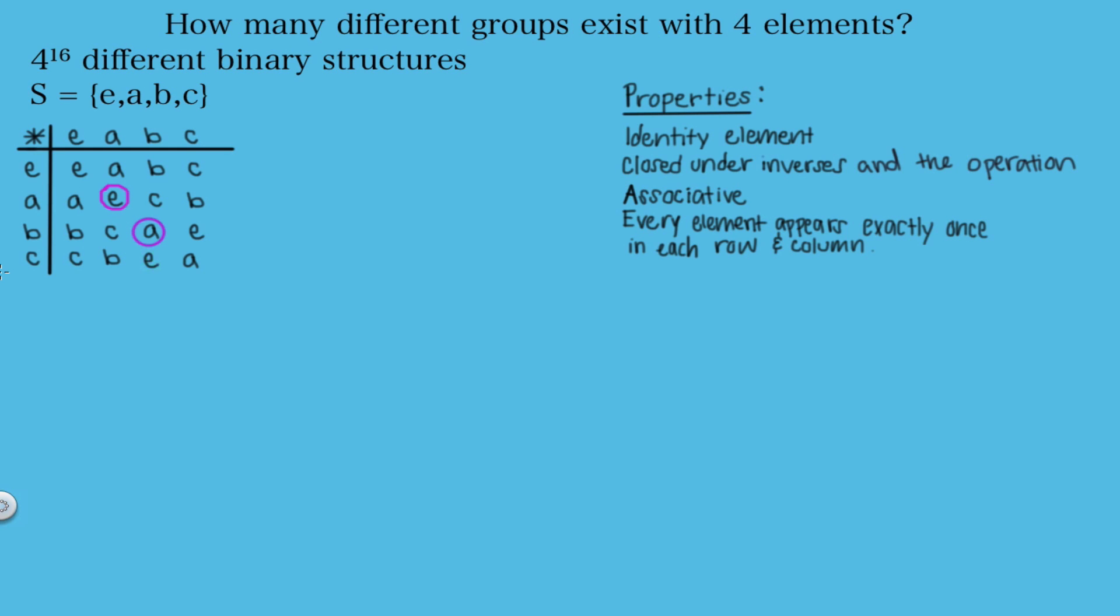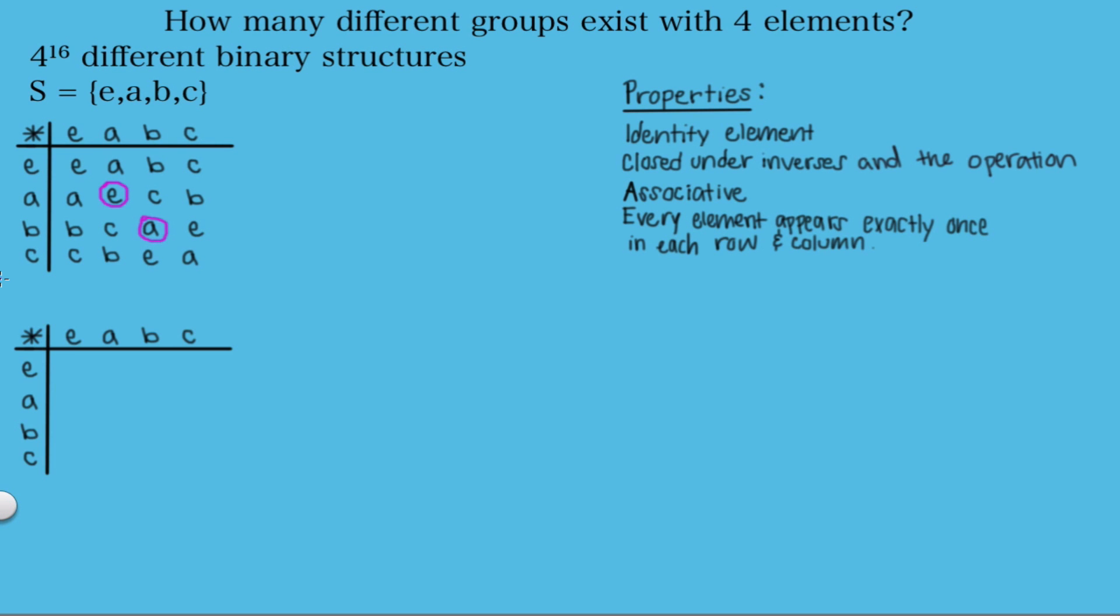But this might not be the only binary operation we can get because here we chose an E where we could have said that this could equal B or C. And here we also chose an A where we could have chosen E. So this one definitely makes a group with four elements, but there might be more groups. So let's look at how this table would change if we didn't choose A here, but we instead chose E.